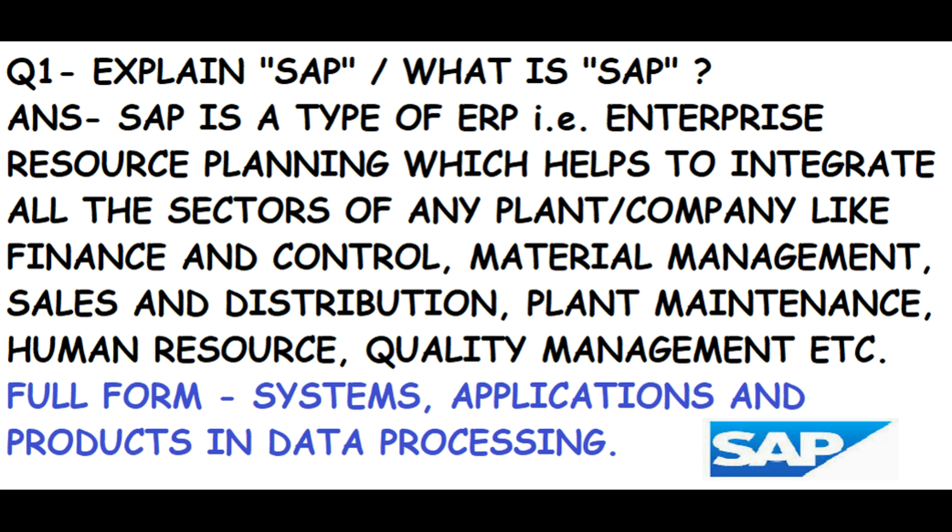The first question is: explain SAP — what is SAP? SAP is a type of ERP, which stands for Enterprise Resource Planning. It helps to integrate all the sectors of any plant or company, such as Finance and Control (FICO), Material Management (MM), Sales and Distribution (SD), Plant Maintenance (PM), Human Resource (HR), Quality Management (QM), and more. The full form, as discussed, is Systems Applications and Products in Data Processing.